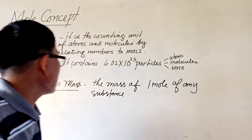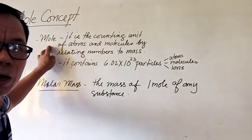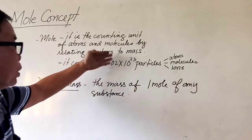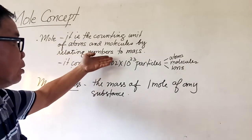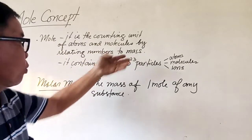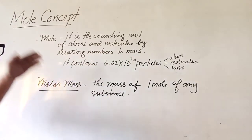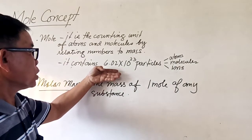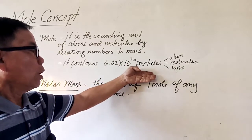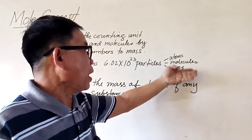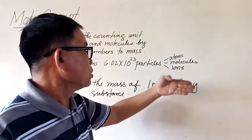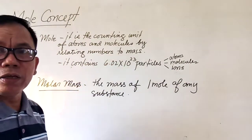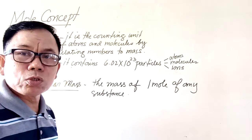So what is the mole concept? Today I'm going to give you the definition of mole. Mole is the counting unit of atoms and molecules by relating the numbers to mass. Mole also contains the particle 6.02 times 10 to the 23rd. It may be in the form of atoms, molecules, or ions. This figure is also known as the Avogadro's number.